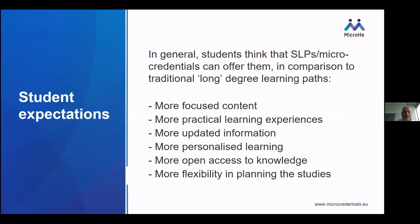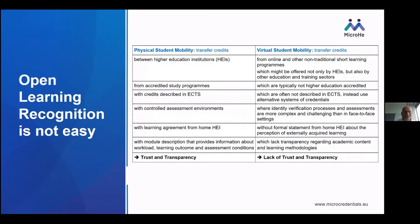Students expect from micro credentials more focused content, more practical learning experiences, more updated information, more personalized learning, more access to knowledge, and more flexibility in planning their studies. But open learning recognition is quite tricky. On the traditional side you have Erasmus exchange, while on the other side, virtual student mobility and learning opportunities from providers that are not always quality-assured higher education institutions create a much trickier situation. There is a lack of trust and transparency.